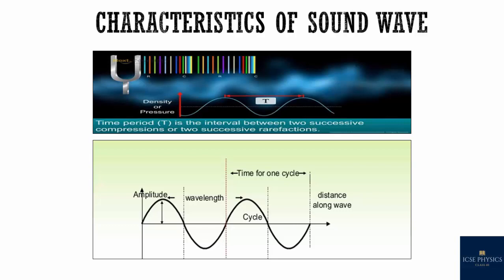Amplitude is the maximum displacement of the particle of a medium on either side of its mean position. The time taken by the particle of a medium to complete one vibration is called the time period of the wave. The number of vibrations made by the particle in one second is called the frequency. The distance traveled by the wave in one time period is called the wavelength. The distance traveled by the wave in one second is called wave velocity.